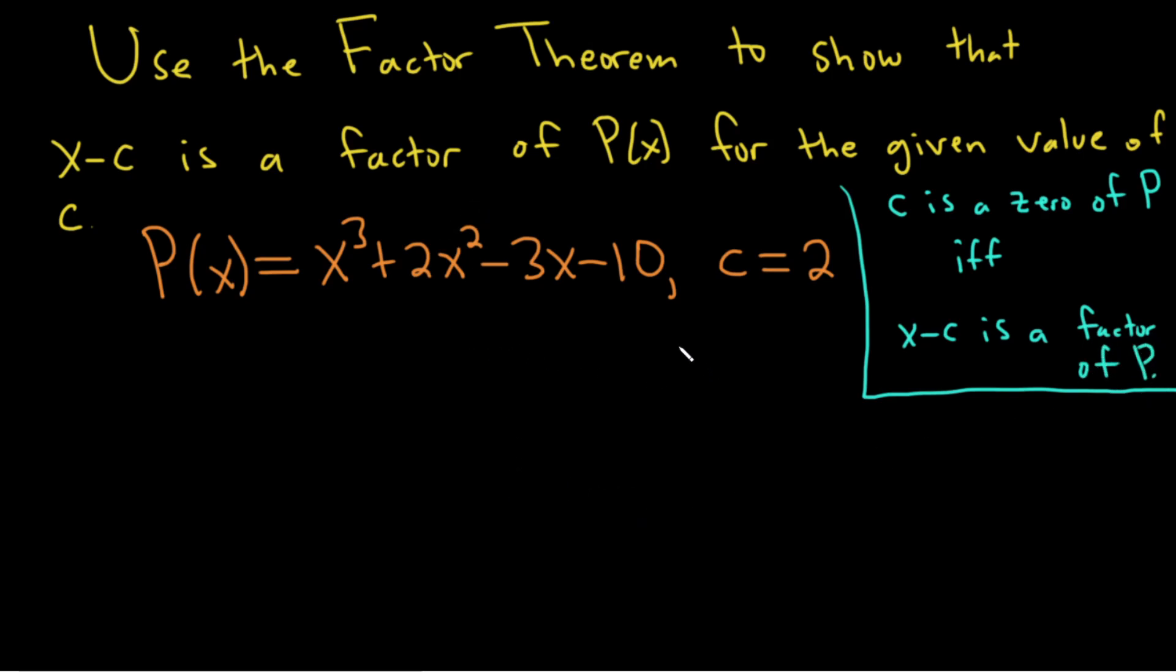So really nice. All we have to do here to show that x minus c is a factor of P of x for the given value of c, which is 2, is show that 2 is a 0 of P. Because if 2 is a 0 of P, then x minus 2 is a factor of P. That's what we have to show.